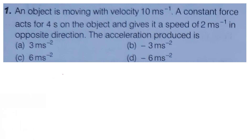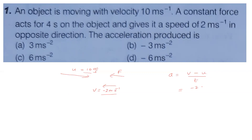The initial velocity is 10 meter per second. The constant force acts in opposite direction, so the final velocity is minus 2 meter per second. Acceleration equals final velocity minus initial velocity divided by time taken. Final velocity is minus 2, initial velocity is 10, time is 4 seconds.